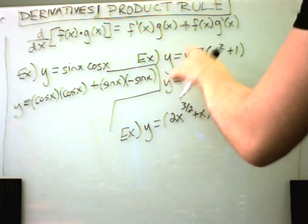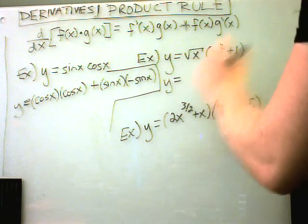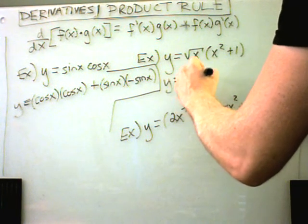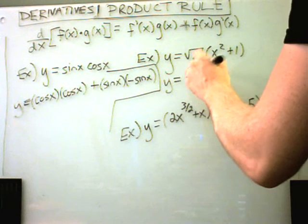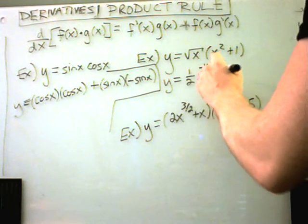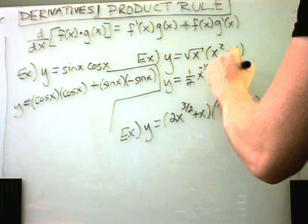So I'm going to take the derivative of square root of x. And remember, square root of x is like having x to the one half. So the one half comes out front. I leave my x alone. I take one away. And if you subtract one from one half, you'll get negative one half. I'll leave the original x squared plus one term alone.